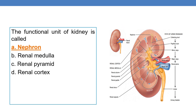Next question: the functional unit of the kidney is called the nephron. Nephrons are the functional units of the kidney. Here you can see the location of the nephron — it is partly located in the renal cortex and renal medulla. The functional unit of the kidney is called the nephron.